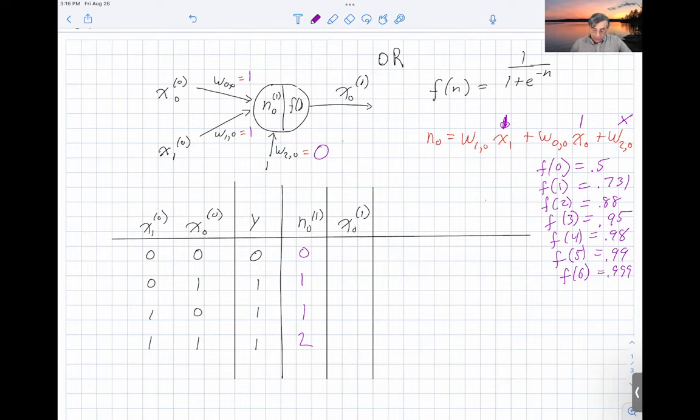And then to compute what our actual output is, at this stage all we have to do is look up from this table here. So this gives us a 0.5, this is a 0.731, this is 0.731, and this is 0.88.